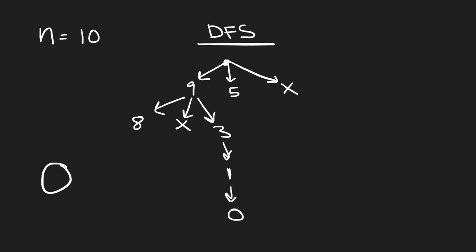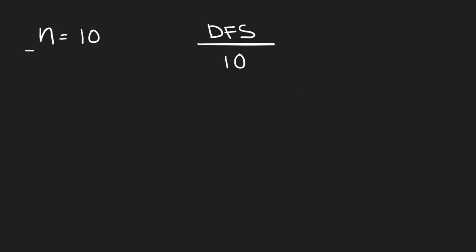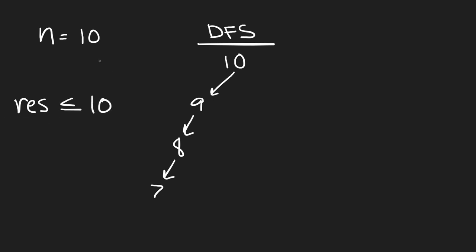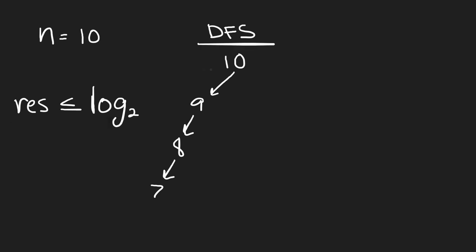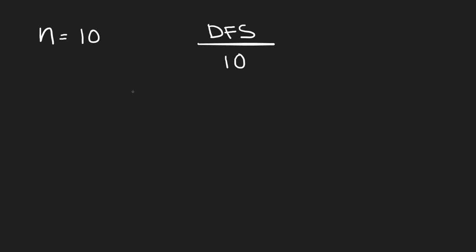We can actually do better than O(N). If we start with N equals 10, we know it'll never take more than 10 days since we could just eat one orange per day. But this boundary is actually smaller — it turns out it's proportional to log base two of N, maybe two times log base two of N. The question is: how is it possible to guarantee eating all N oranges in log base two time?